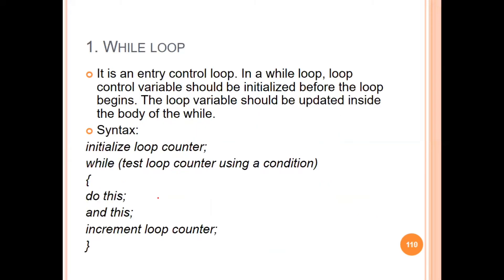We have three loops: the while loop, the do-while loop, and the for loop. The while loop is an entry control loop. In an entry control loop, we have to check the condition before executing the body. If the condition is true, the body of the loop will execute.